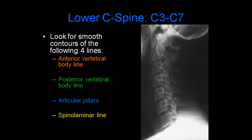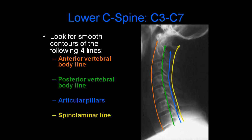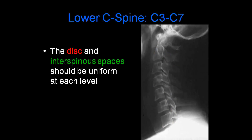When looking at the lower cervical spine, it's important to look for smooth contours of the following four lines: the anterior vertebral body line, the posterior vertebral body line, the articular pillars, and the spinal laminar line. In addition, the disc and interspinous spaces should be uniform at each level.